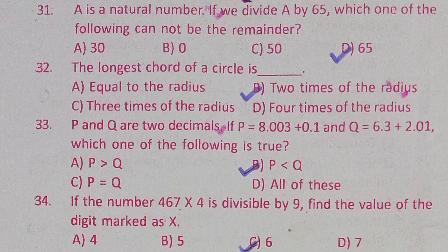Question 31: A is a natural number. If we divide A by 65, which one of the following cannot be the remainder? Option A: 30, Option B: 0, Option C: 50, Option D: 65. The correct answer is Option D: 65.